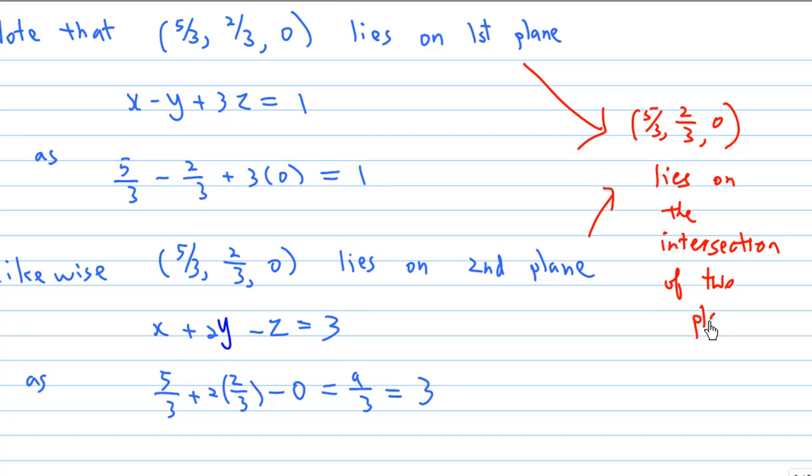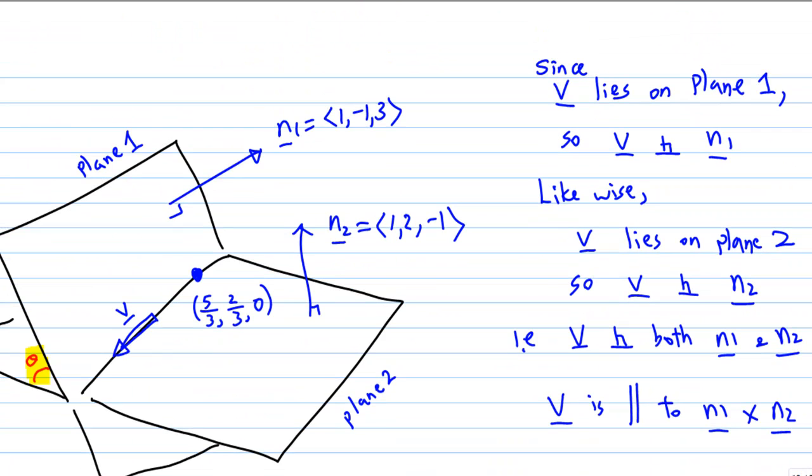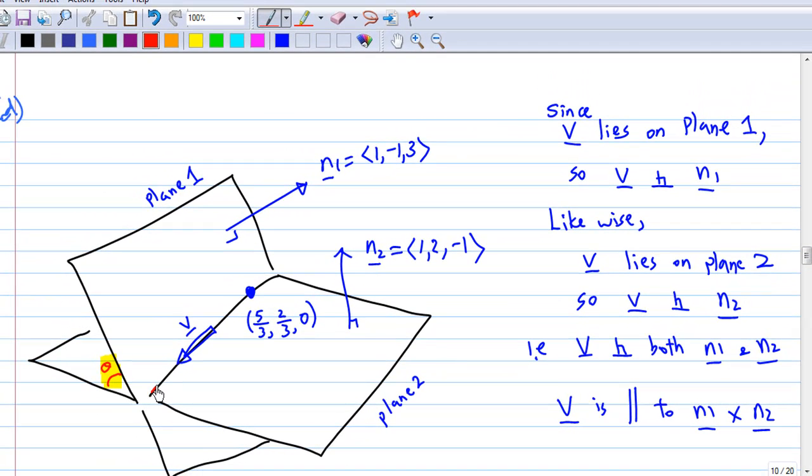And we know that these two planes are not parallel because the normals are not parallel. The intersection will be a straight line. As you see here, this is the intersection, a straight line.